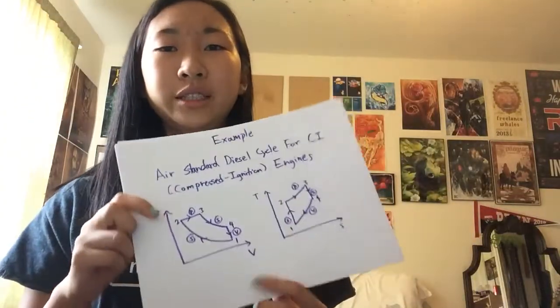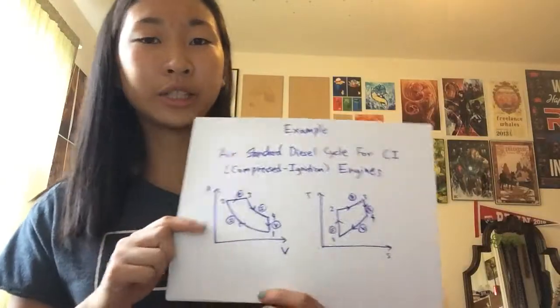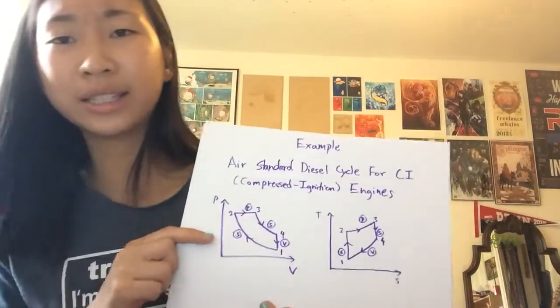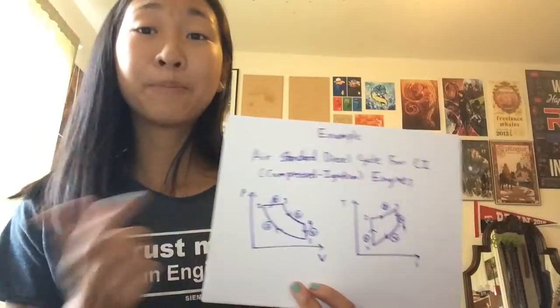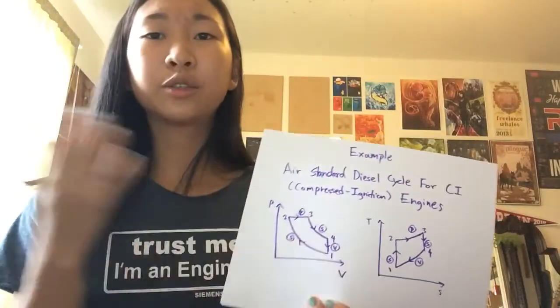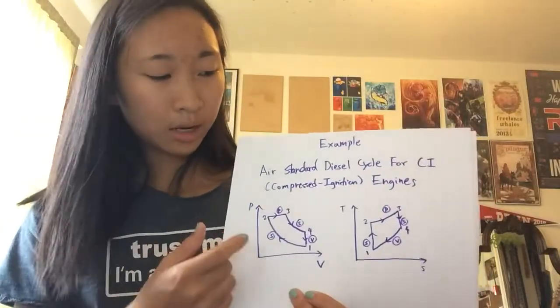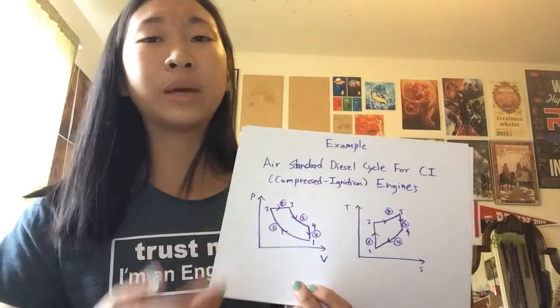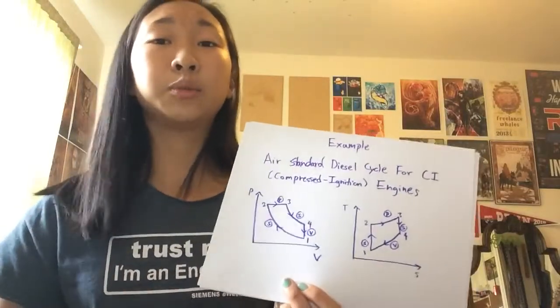Those common processes are shown in another example, which is the air standard diesel cycle for CI compressed ignition engines. Basically, right now, you just need to pay attention to the fact that it's air, so since it's in the gas phase, both of these are shown on the right side of the vapor dome and does not need to be included. It's assumed you're on the right.